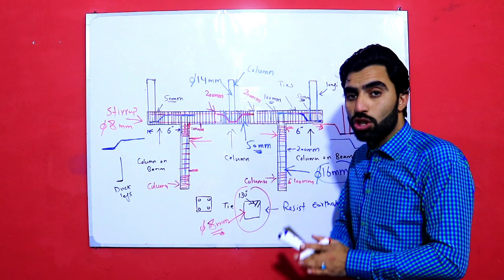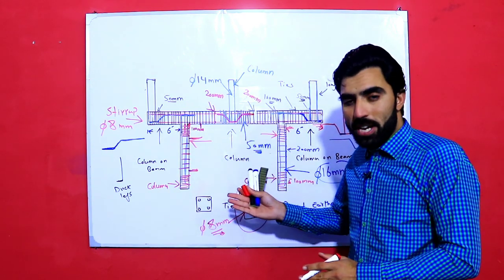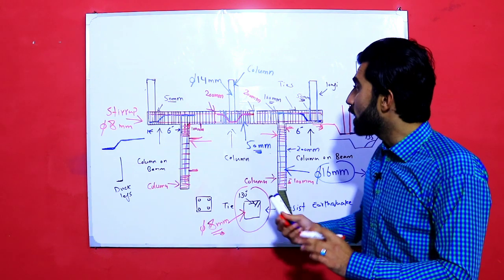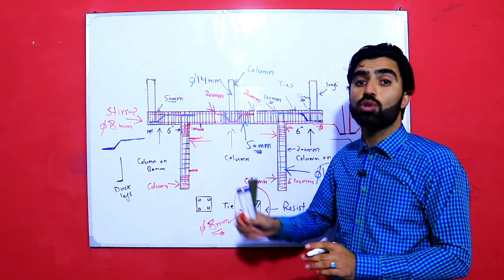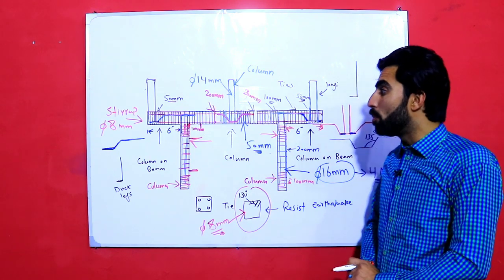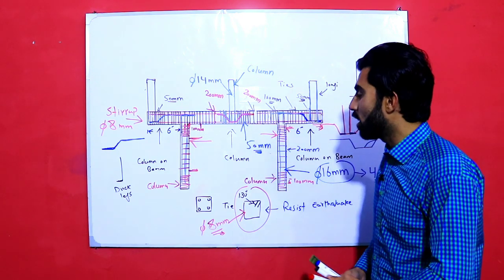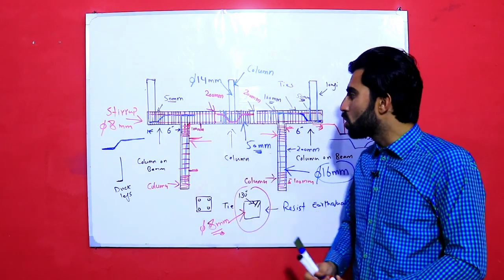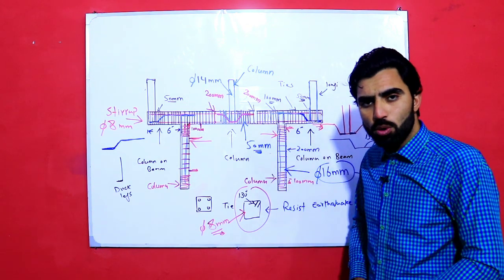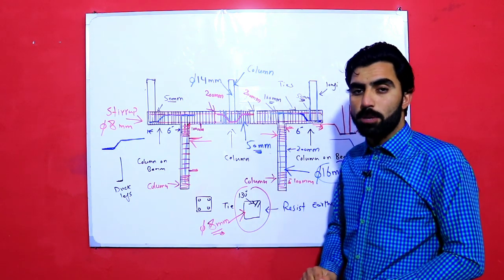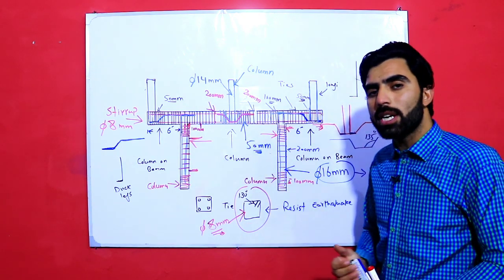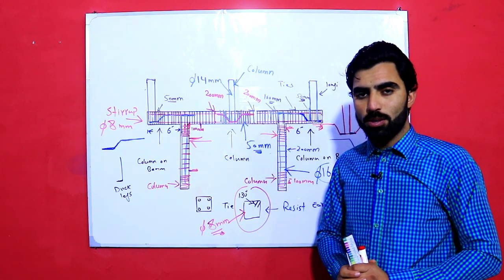So guys, this is a very important topic which I have discussed. Many civil engineering students don't know how to place a column on a beam without support. The bent-up bar must be provided, the longitudinal bars at the base should be bent like duck legs, and the diameter of the upper RCC column longitudinal bars should be less than the bottom longitudinal bars. I hope this will help you save your structure. If you have any question related to steel structure, bent-up bar, or how to provide a column on a beam without support, please comment. I will try to reply. Thanks for watching, see you in the next video.